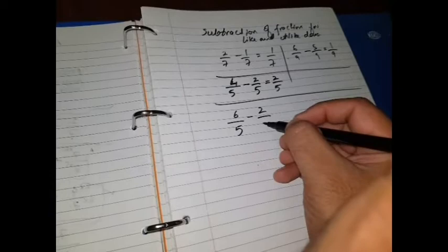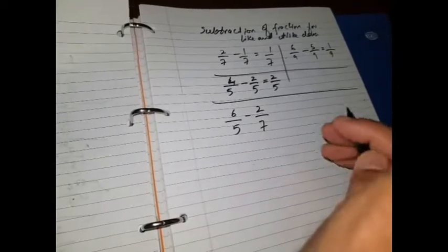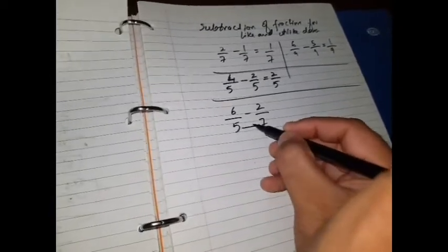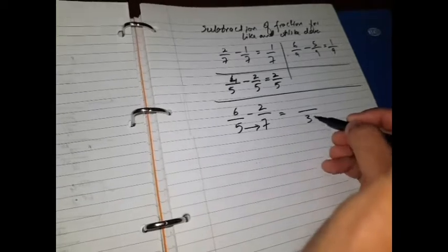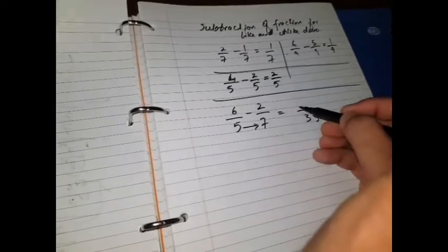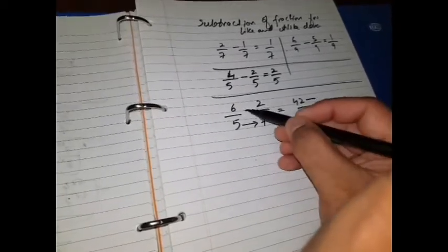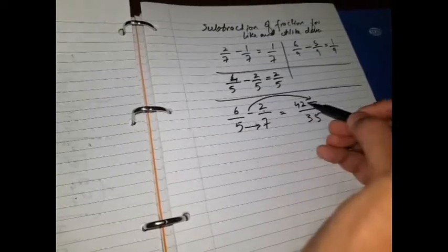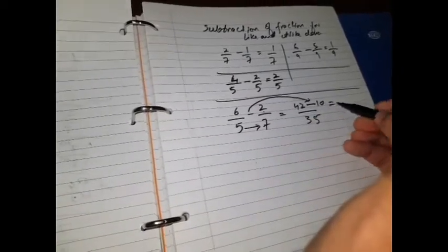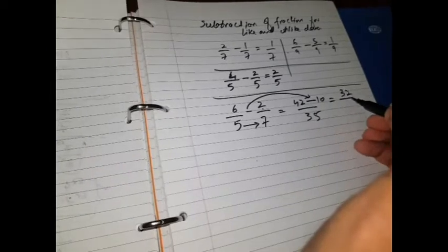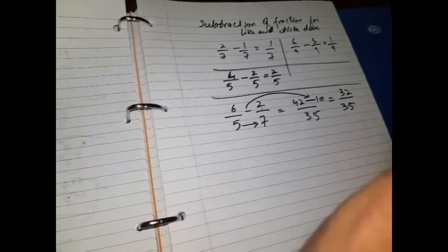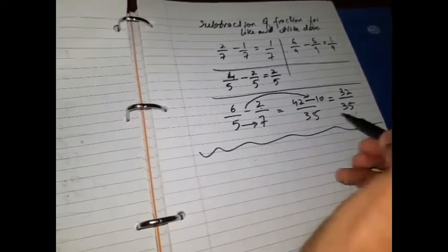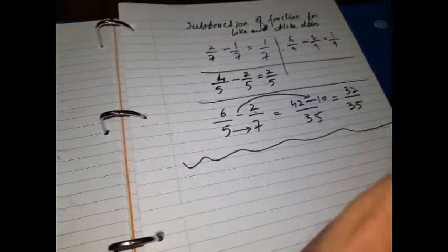Everything remains same. 5 times 7 is 35. 7 times 6 is 42, minus - this minus is minus - and 5 times 2 is 10. So 42 minus 10 is 32. 32 over 35 is my answer. Any confusion? No, it's very simple, very easy.